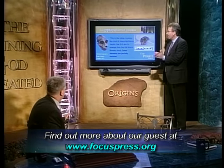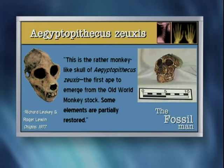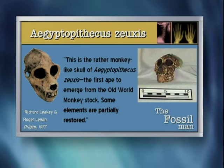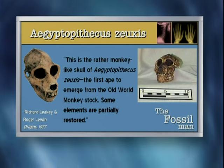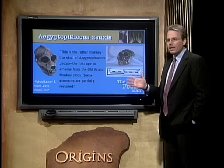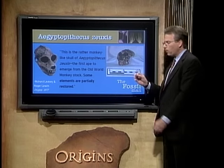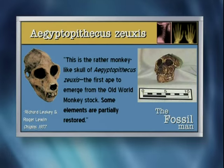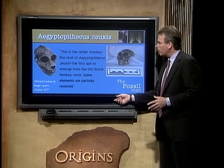Let's start with Egyptopithecus zuxus. Ironically, there's not a whole lot of controversy here. This creature allegedly lived 28 million years ago. Richard Leakey and Roger Lewin in their book Origins said, this is the rather monkey-like skull of Egyptopithecus zuxus, the first ape to emerge from the old world monkey stock. Some elements are partially restored. When they say partially restored, they're not kidding - what they really have are just a few bone fragments and a couple of teeth. The second thing to note is its name. This, they would say, is the creature linking us back to the apes.